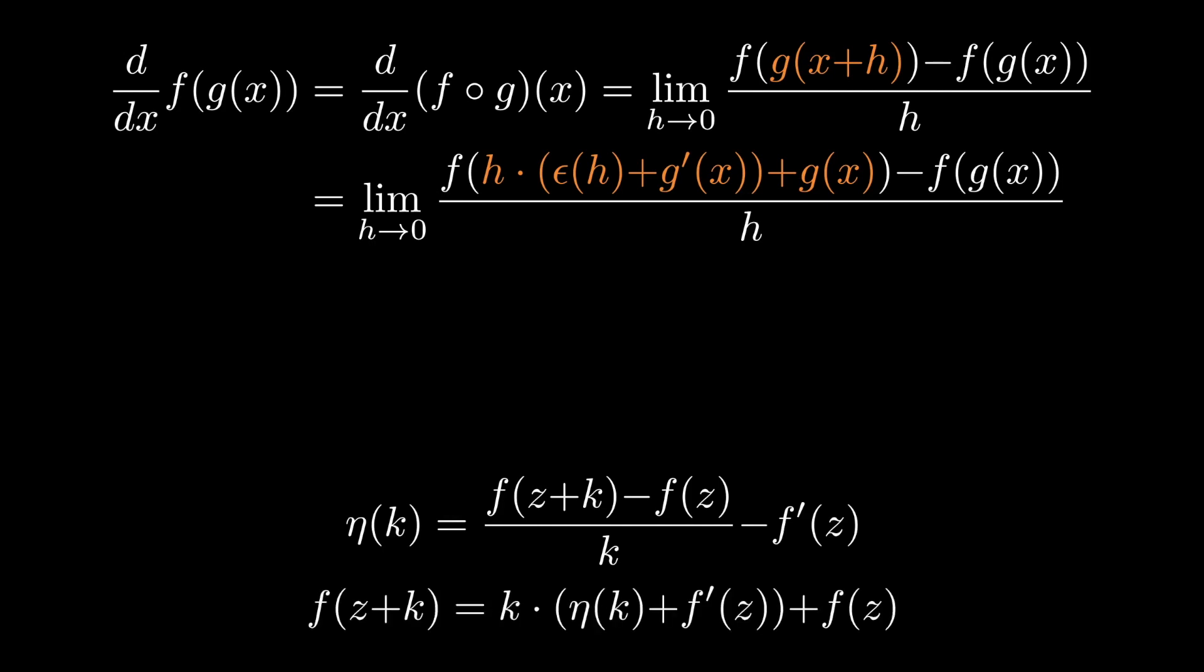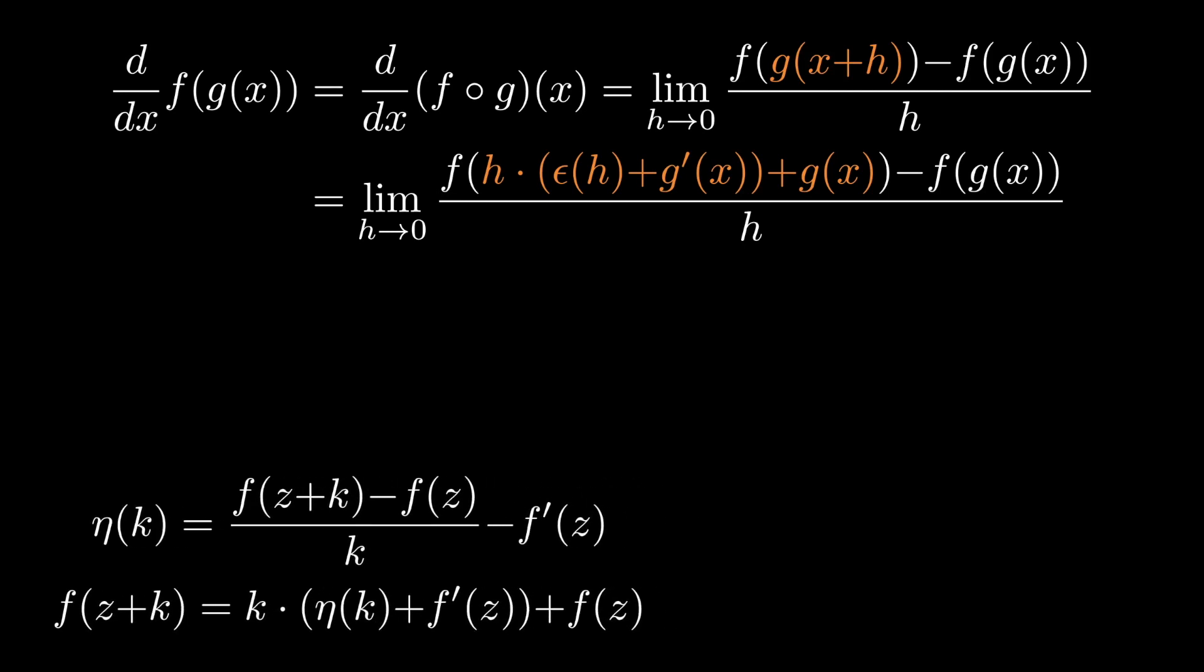Now this is where things are going to get a little bit tricky, because what we're going to do is look at the orange part of the second equation and find a way to write that in the form z plus k. z equals g(x) seems straightforward enough, because that's where we're evaluating the function. k here is now a function of h, and it reflects the change in the input to f as a function of the change in the input to g.